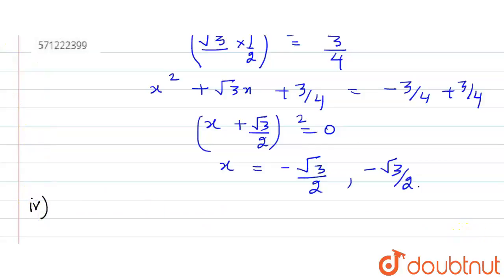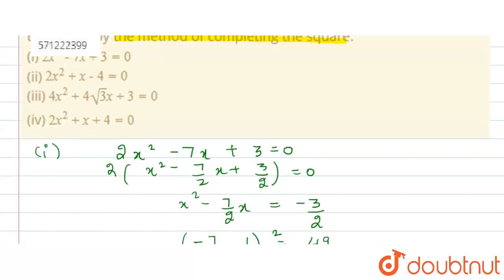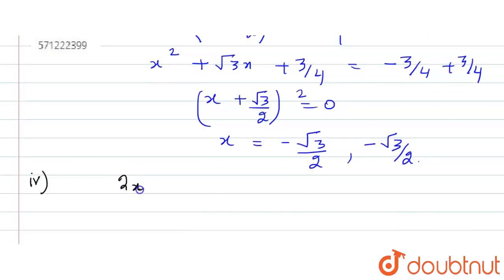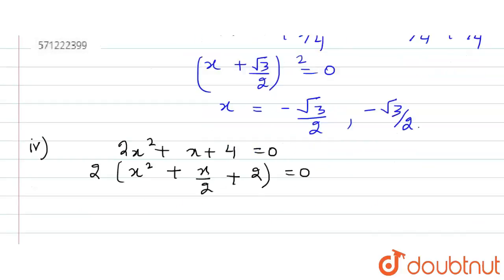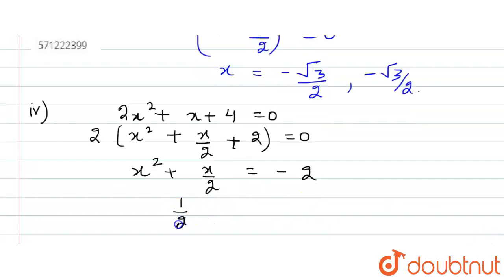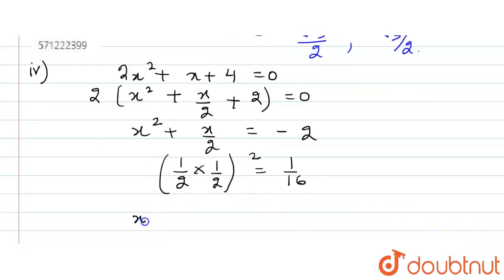The fourth part: the quadratic equation is 2x² plus x plus 4 equals 0. Applying the method of completing the square, taking out 2 common gives x² plus x/2 plus 2 equals 0, so x² plus x/2 equals minus 2. Taking the coefficient of x, which is 1/2, multiplying by half and squaring gives 1/16. Adding 1/16 to both sides.